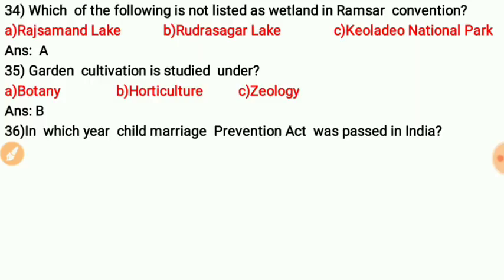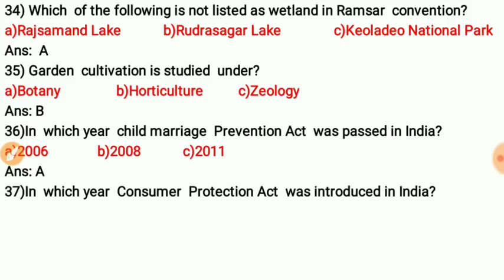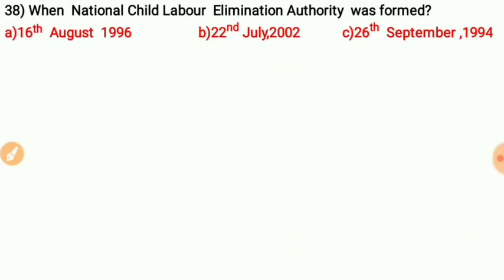Question thirty-four: In which year was the Child Marriage Prevention Act passed in India? The answer is option A — 2006. Question thirty-five: In which year was the Consumer Protection Act introduced in India? Option C — 1986.